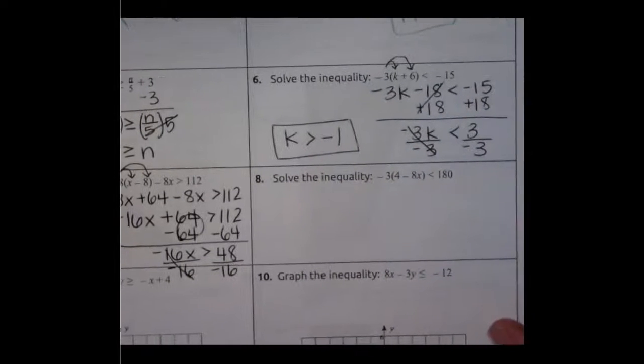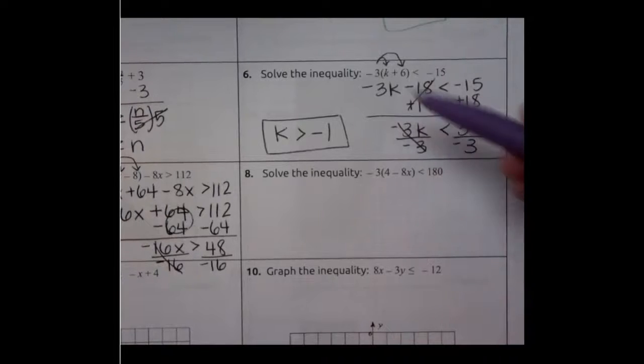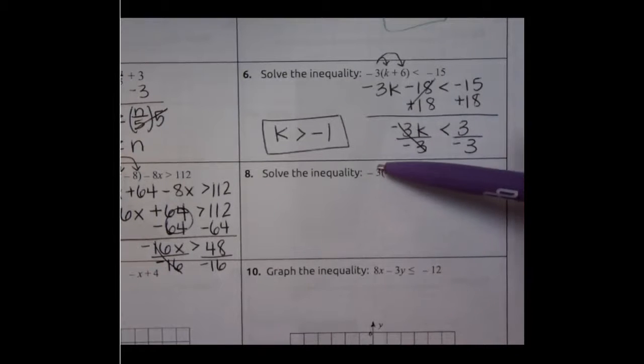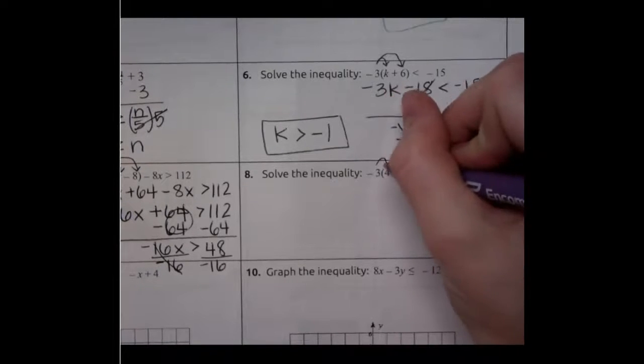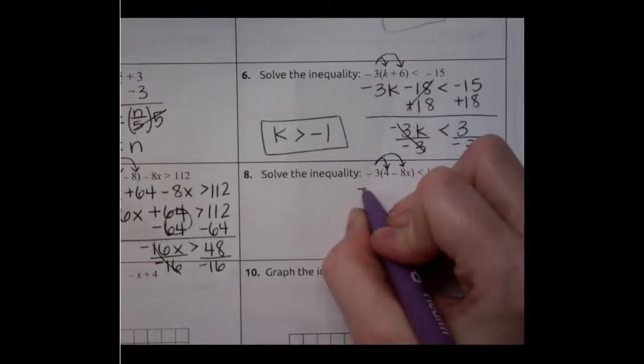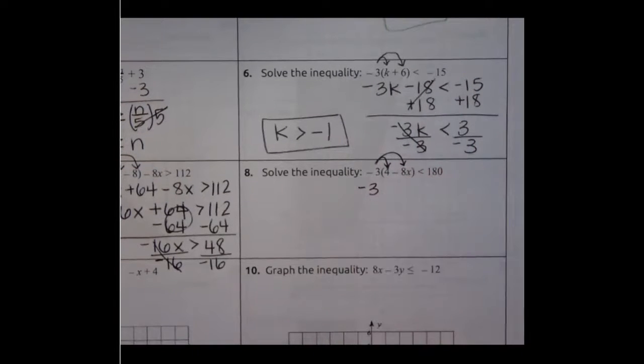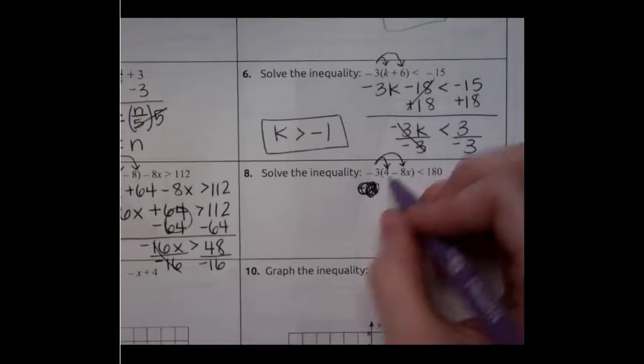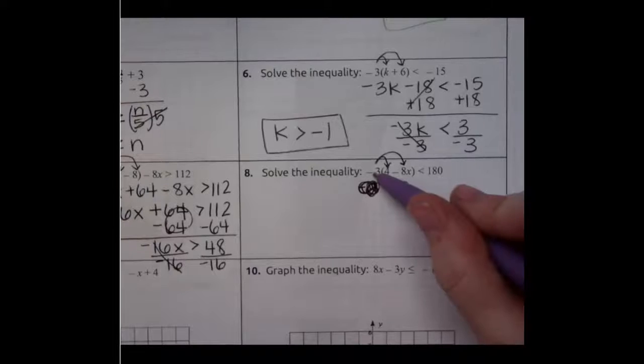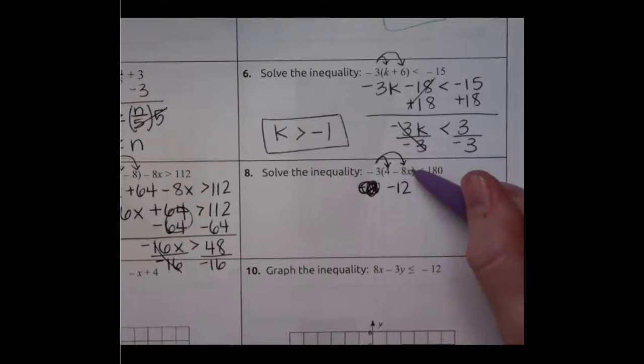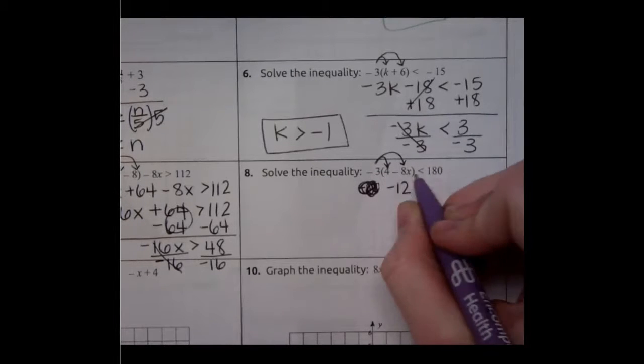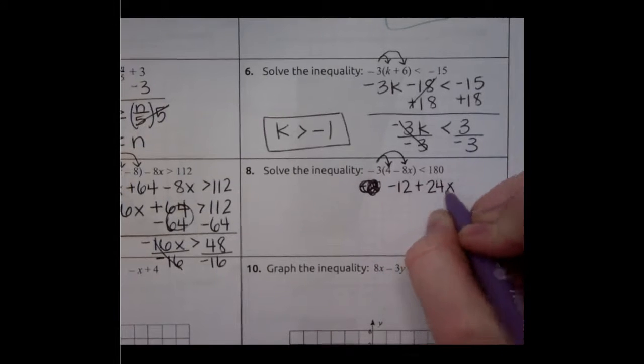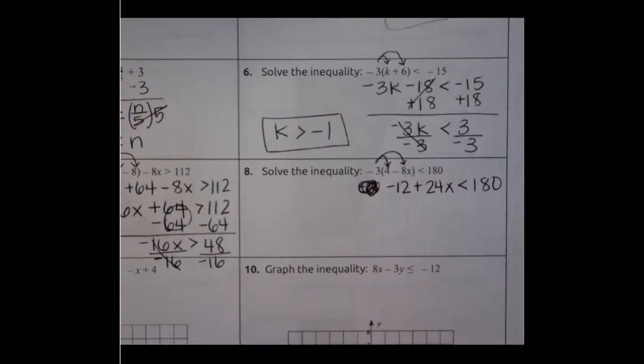Our last one from 4 through 8 is number 8. So once again I have a negative on the outside. It doesn't matter if that's negative. We have a number on the outside of parentheses. Negative 3. We're going to distribute. I see a theme here. Oh y'all. Miss Tate is tired. Apologize for the mistake. Erase that. Negative 3 times 4 is a negative 12. Negative 3 times a negative 8x is going to be a positive because negative times negative is positive. 24x which is less than 180.